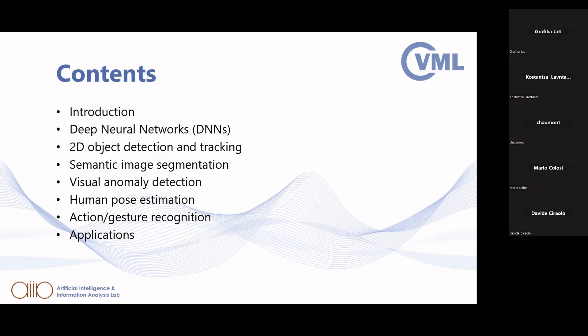We will start with a short introduction, then see which are the most common types of deep neural networks used to develop these algorithms, and then have a closer look at different tasks that can be performed — for example, 2D object detection and tracking, semantic segmentation, human pose estimation, and so on. Some of these have already been presented by Professor Pitas, but I will get into more technical details. Finally, we will see some real-world applications where advanced systems equipped with these deep learning algorithms are used to assist human workers.